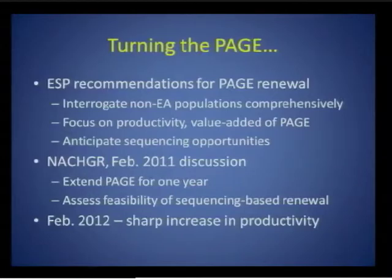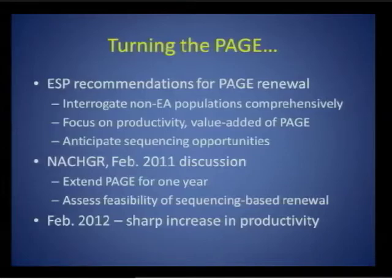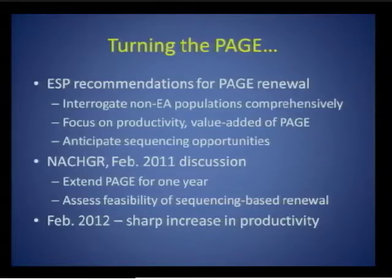As the time to plan for a potential renewal grew closer, we sought advice from our ESP. They recommended that PAGE continue to focus on fine mapping via the Metabochip in African Americans, and recommended a year-long extension to focus on productivity. They advised NHGRI to anticipate opportunities to incorporate sequencing into a PAGE-based renewal when timing and cost became favorable. At Council last February, Council recommended extending PAGE for one year while the feasibility of a sequencing-based renewal was assessed.